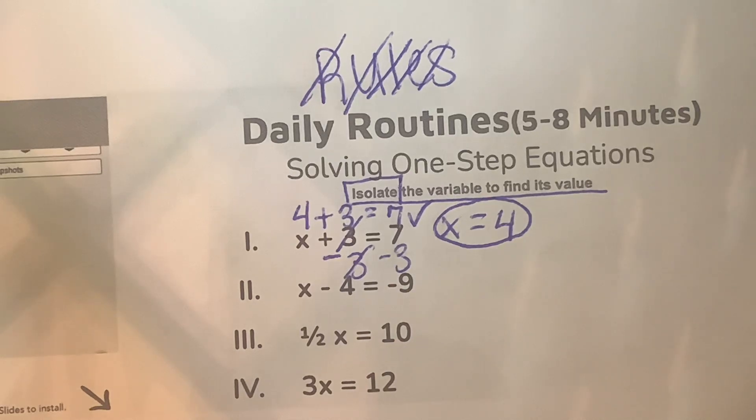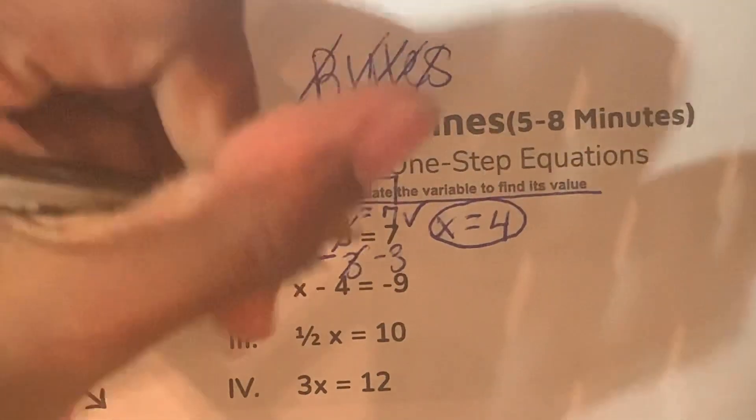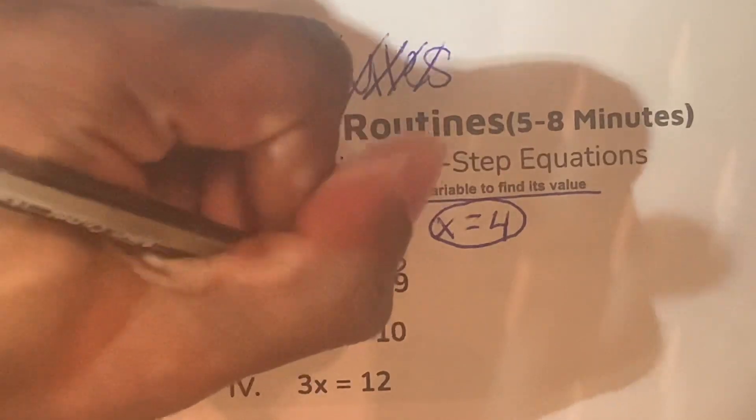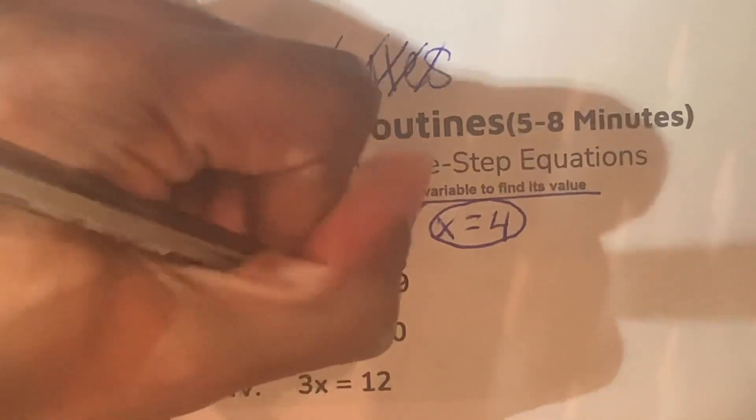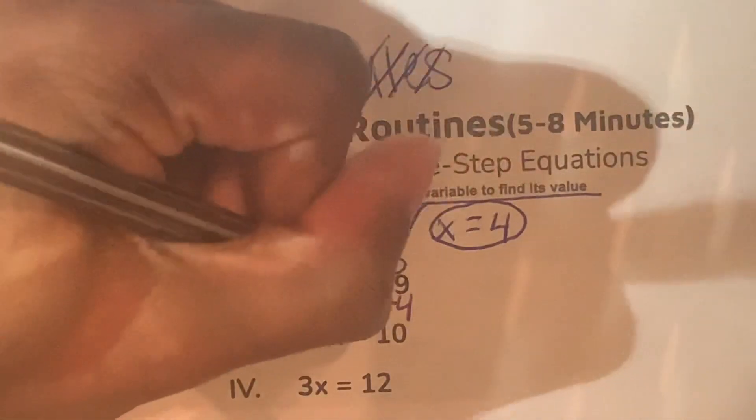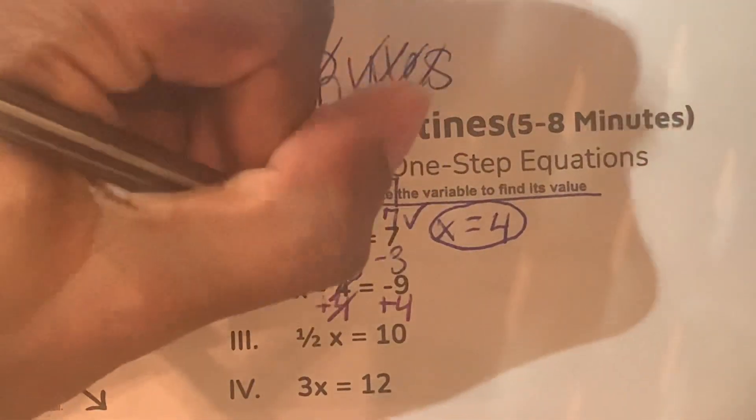Let's try this next problem here. x minus 4 is equal to negative 9. So the opposite of subtraction is addition. So in this case, we're going to add 4 to both sides of the equation. The negative 4 and the positive 4 cancel out, and we're left with x is equal to negative 5.